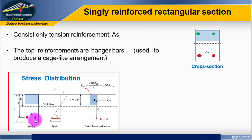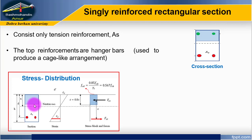Here we have the area of steel, As, and the neutral axis. Below the neutral axis is the compression zone, where the concrete registers a stress block — this is the concrete compression zone stress block.